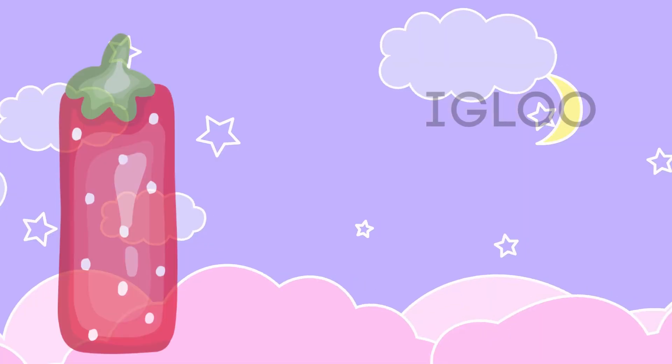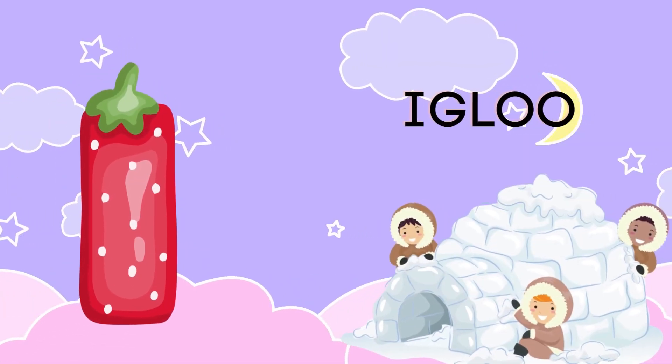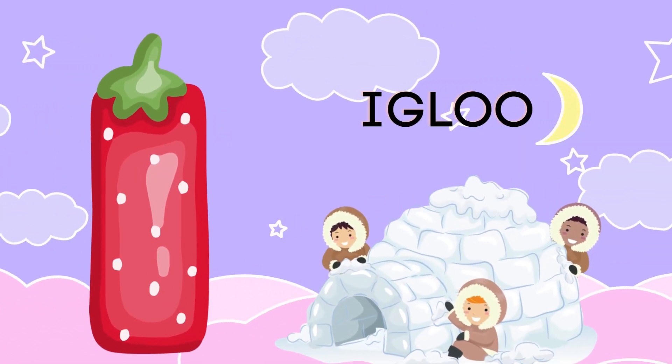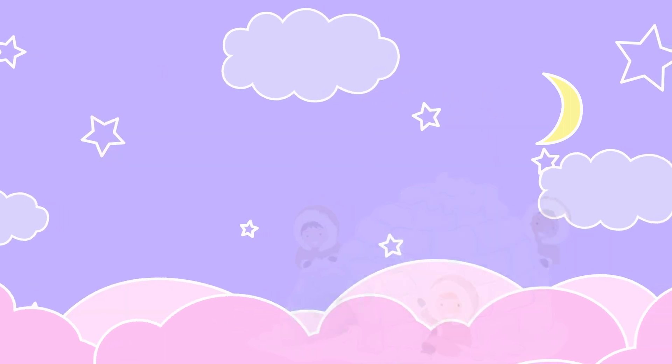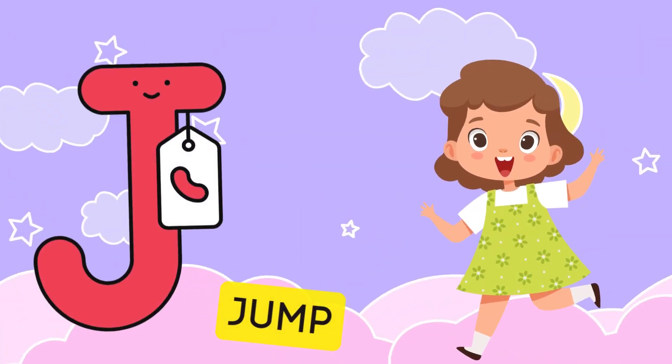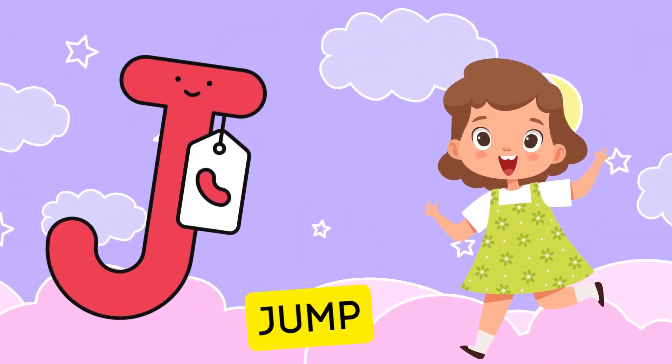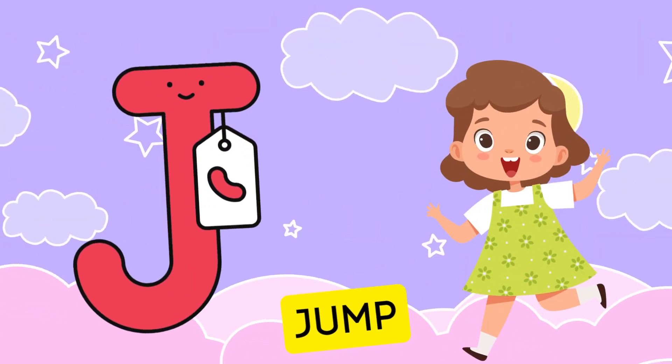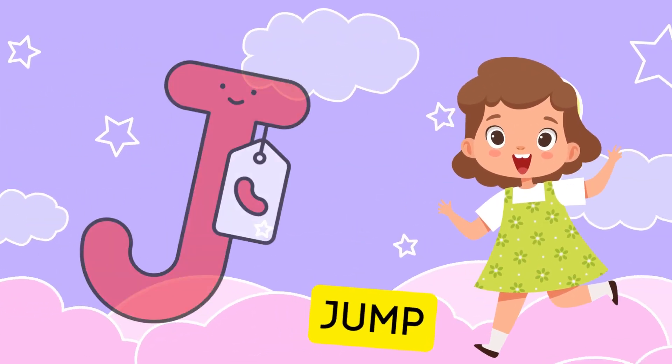I is for igloo, i-i-igloo. J is for jump, j-j-jump.